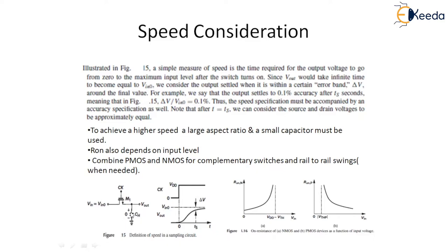Thus to achieve a higher speed, a large aspect ratio W by L and a small capacitor must be used. R_on also depends on the input level, giving a greater time constant for more positive input.